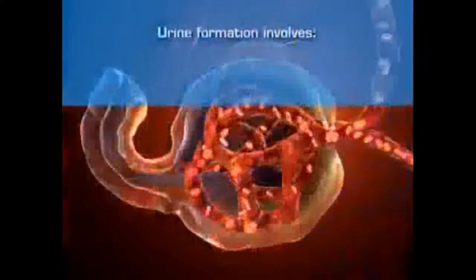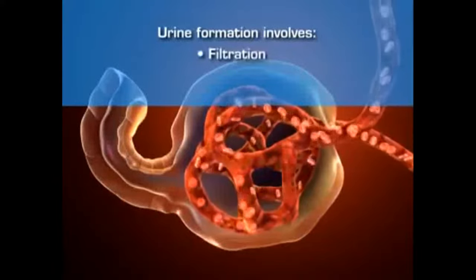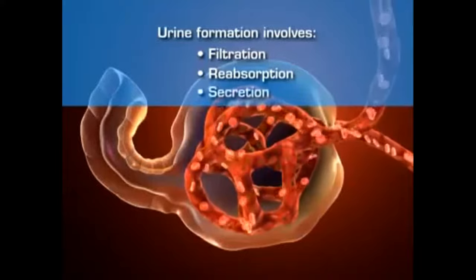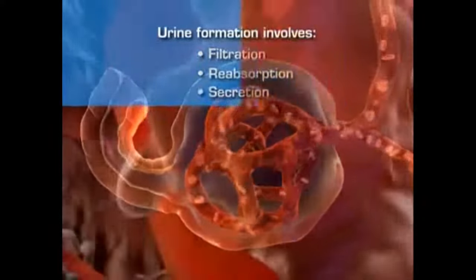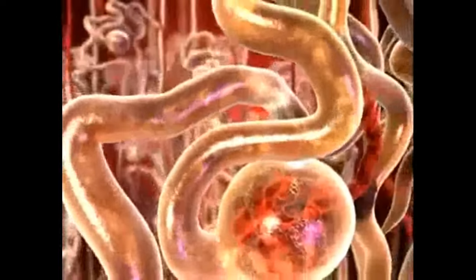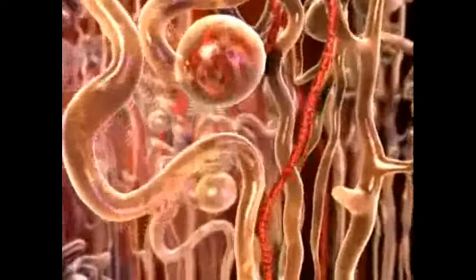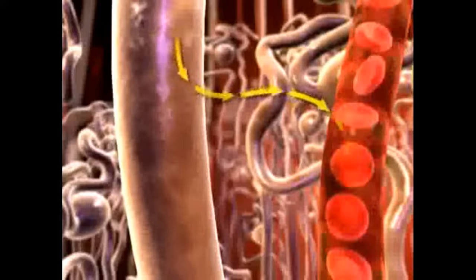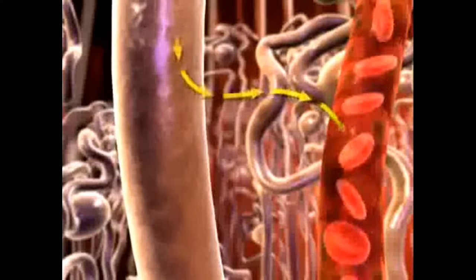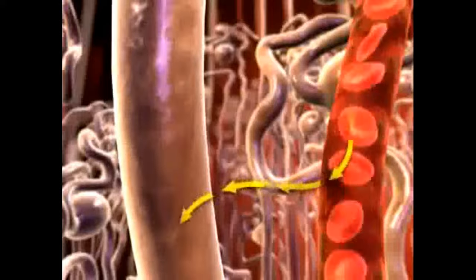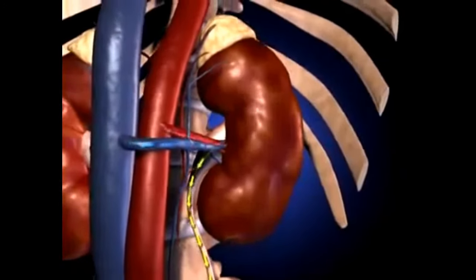Urine formation involves the filtration of blood by the glomerulus to form an ultrafiltrate, the tubular reabsorption of electrolytes and nutrients needed to maintain the constancy of the internal environment, and the secretion of waste materials. Filtration occurs as blood flows into the glomerulus from its afferent arterioles and plasma moves into Bowman's space. From there, the glomerular filtrate moves into the tubular segments of the nephron, where through tubular reabsorption, electrolytes and nutrients move back into the bloodstream, and through tubular secretion, substances move from the peritubular capillaries into the urine filtrate.